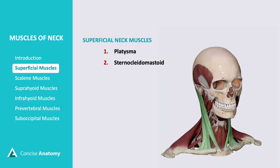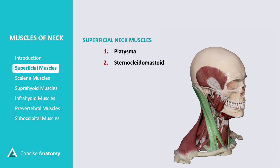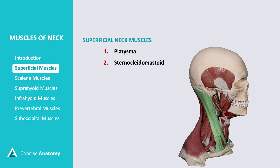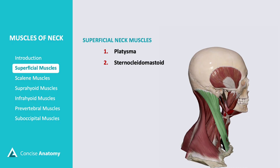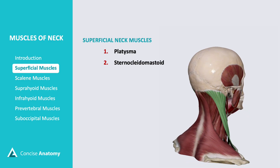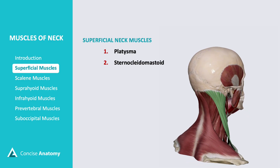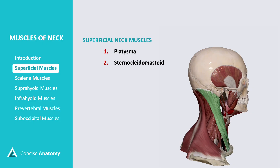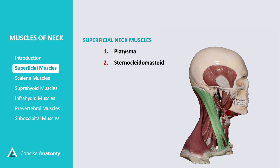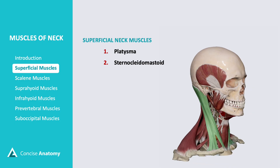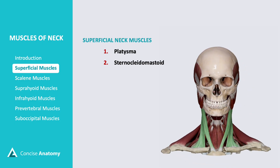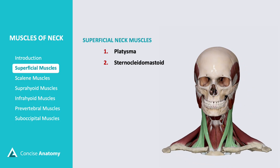Sternocleidomastoid is a prominent muscle extending from the sternum and clavicle to the mastoid process of the skull. It is responsible for head rotation, flexion, and lateral bending, allowing movements like turning the head and tilting it to the side.